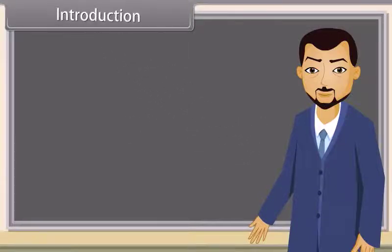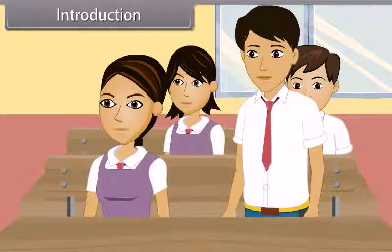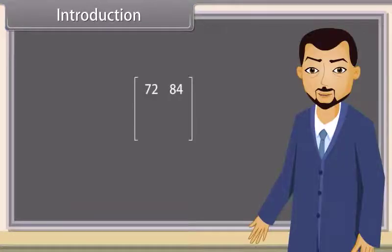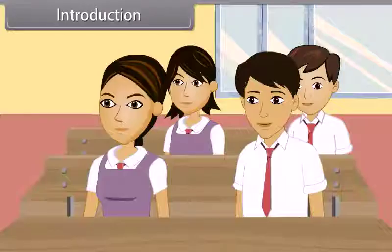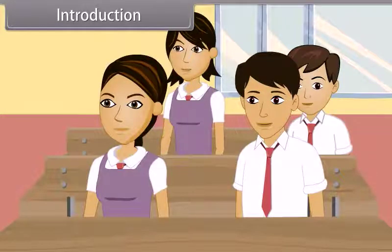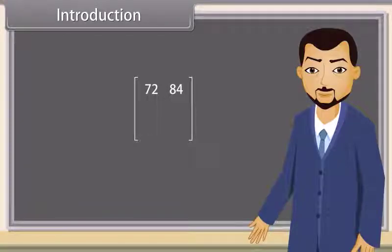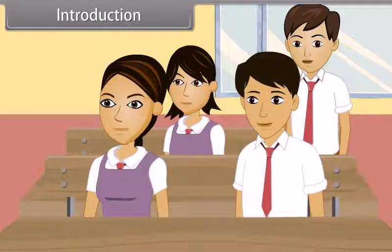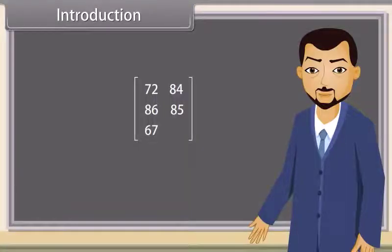Introduction. Teacher asks: Arun, how much did you score in science last year? Student: 72. Teacher: And in maths? Student: 84. Teacher: 72 in science and 84 in maths. Okay, Shraddha, how much did you score in science and maths? Student: I scored 86 in science and 85 in maths. Teacher: 86 in science and 85 in maths. Prateek, you tell me. Student: 67 in science and 72 in maths.